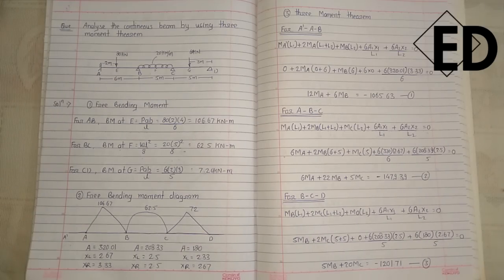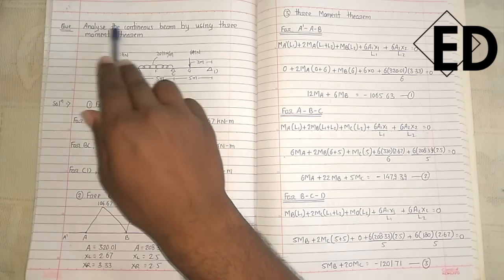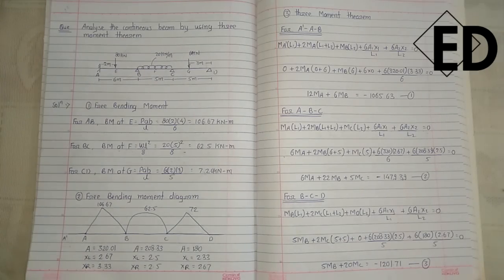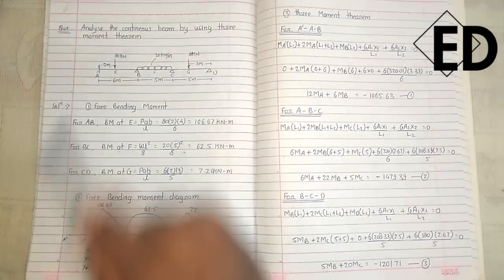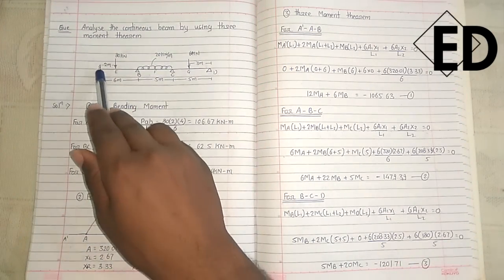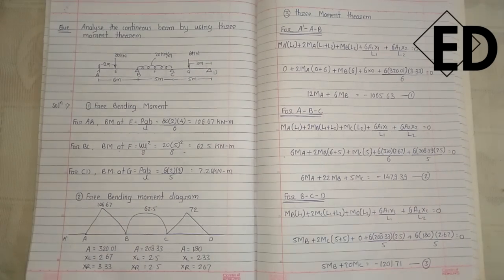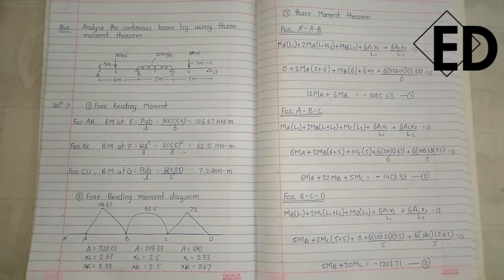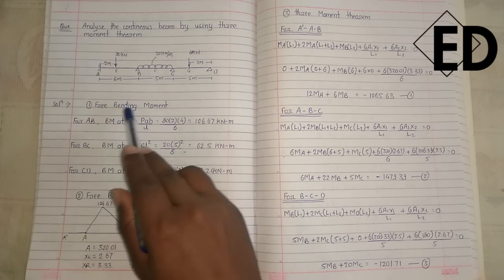Hello friends. The question asked in exam is like this: analyze the continuous beam by using the Three Moment Theorem. This is a type-3 question in which one end is a fixed support and one is a hinge. For calculating bending moment, we have five steps. First of all, the free bending moment diagram is calculated for each span.